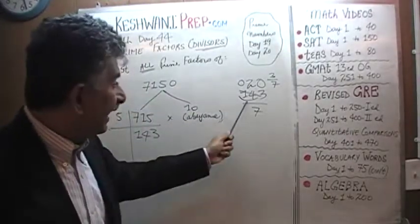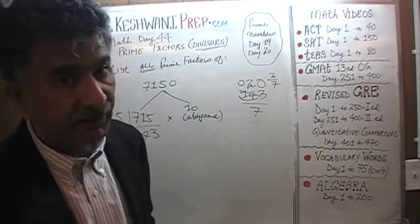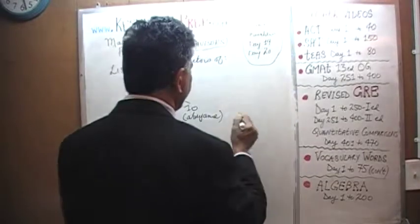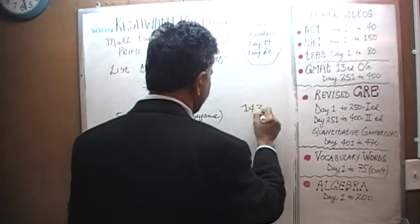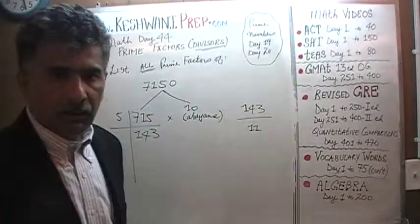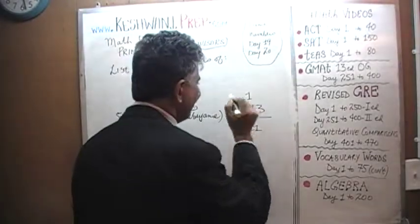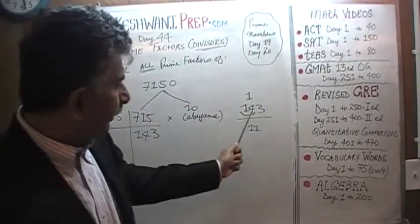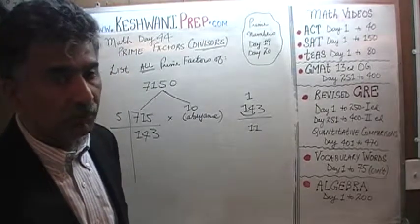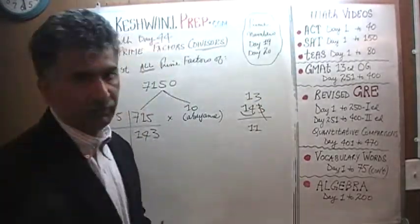The next prime number is not 9 — 9 is not a prime number. It's 11. Let's see if 143 is divisible by 11. How many 11s does 14 have? 14 has one 11. The remaining 3 goes and joins the 3 to become 33, and 33 has three 11s. So 143 ÷ 11 = 13.